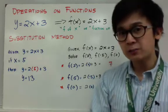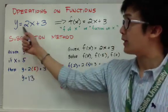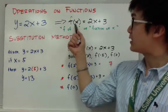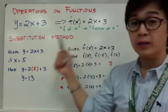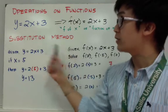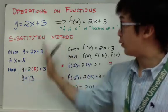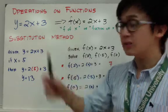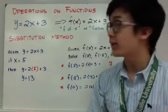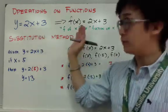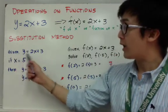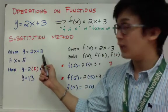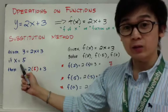Since the concept is pretty much the same as y equals 2x plus 3, given that it's the same as f of x equal to 2x plus 3, the substitution method is also applicable to both notations. A notation is just a different way of writing a particular term. So now we have y equals 2x plus 3, and we are asked to find the value of y given that x is equal to 5.